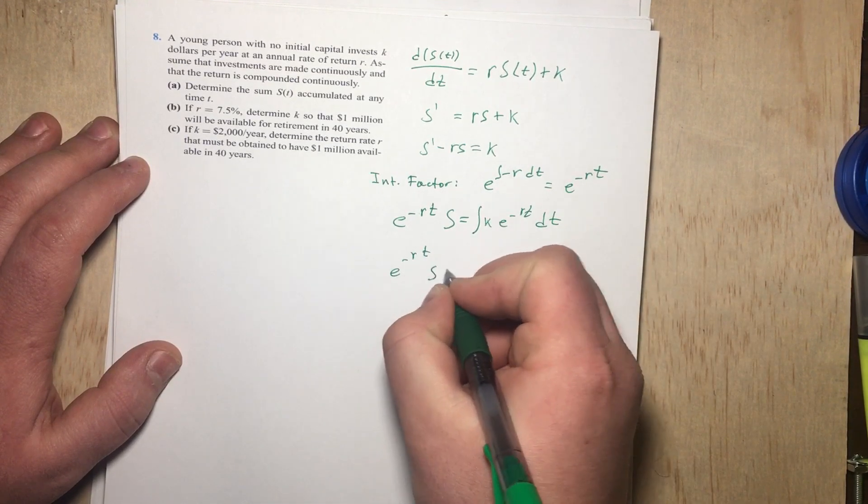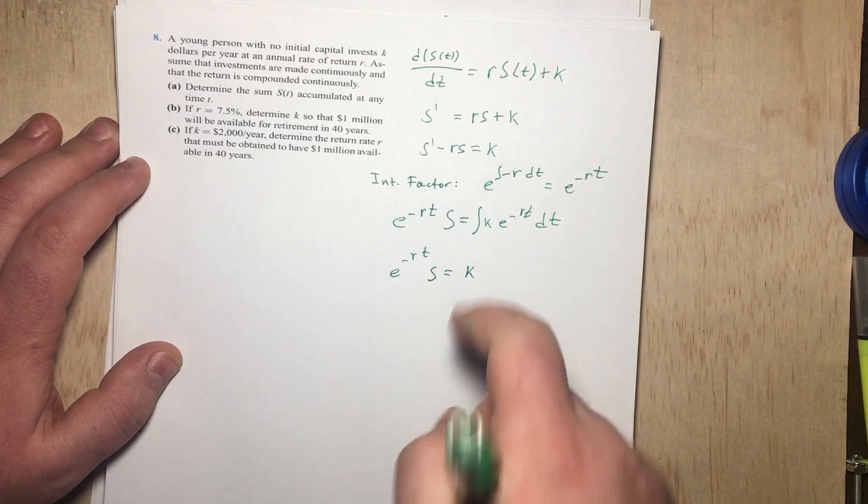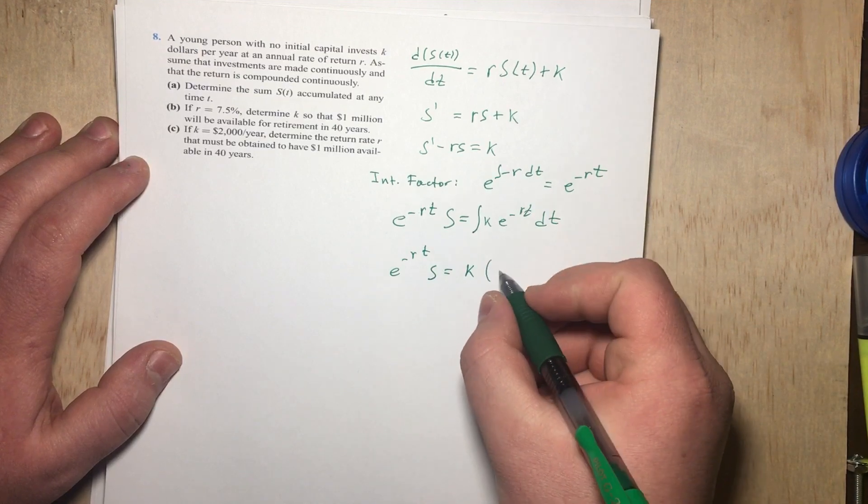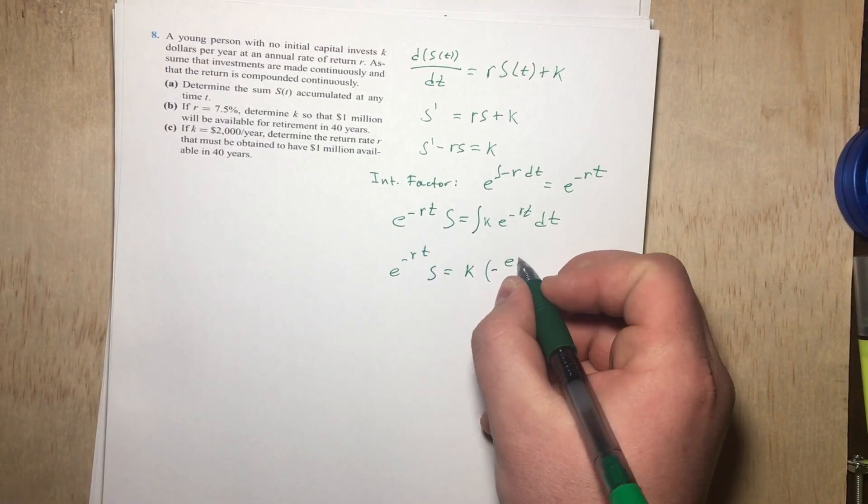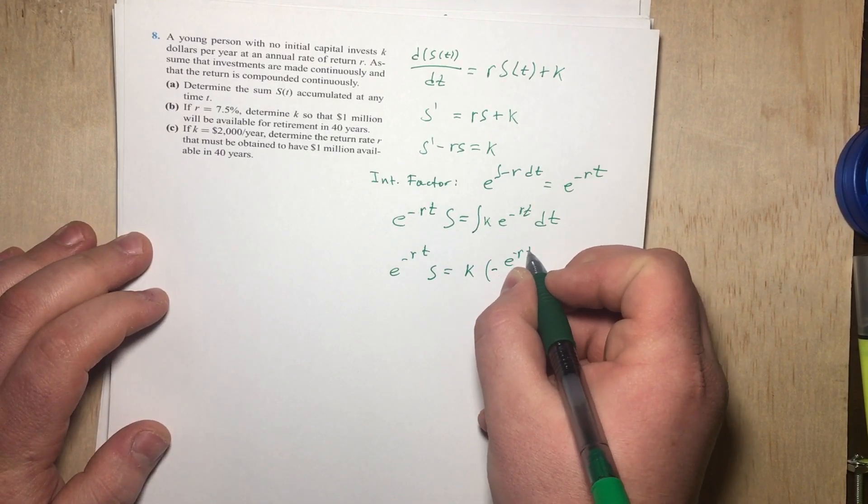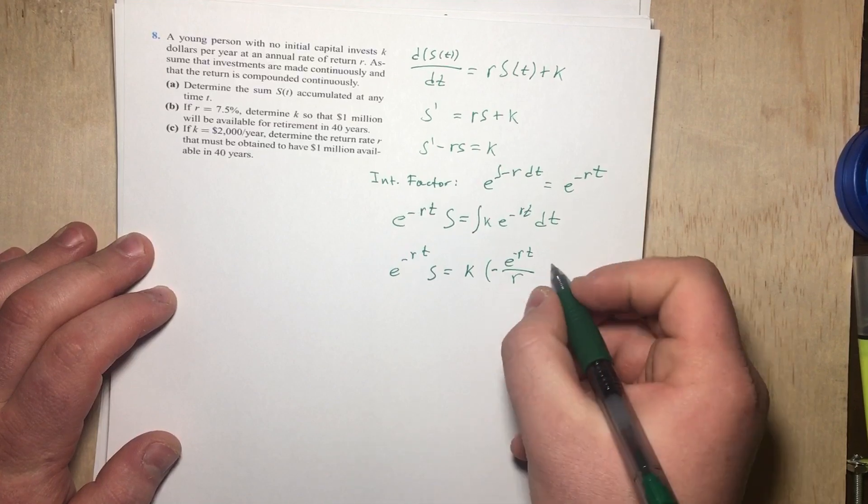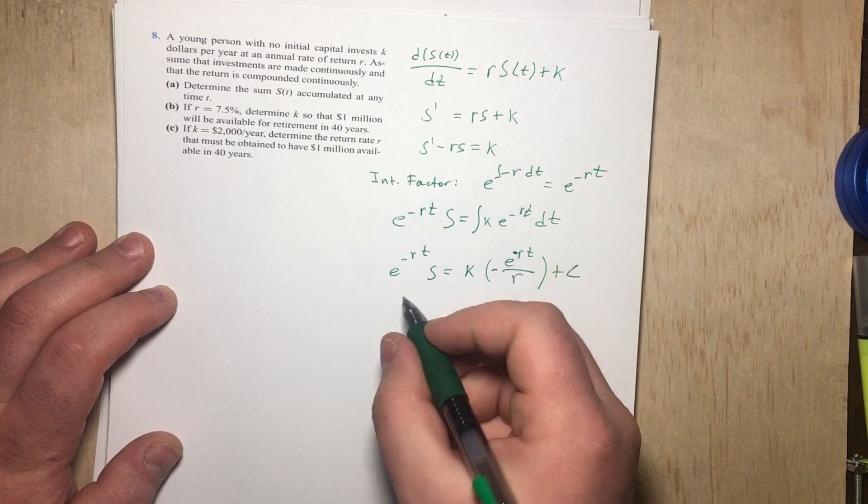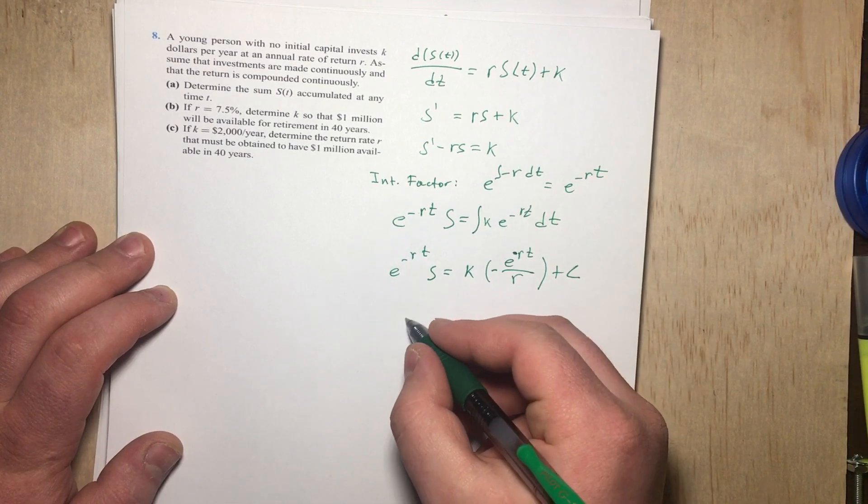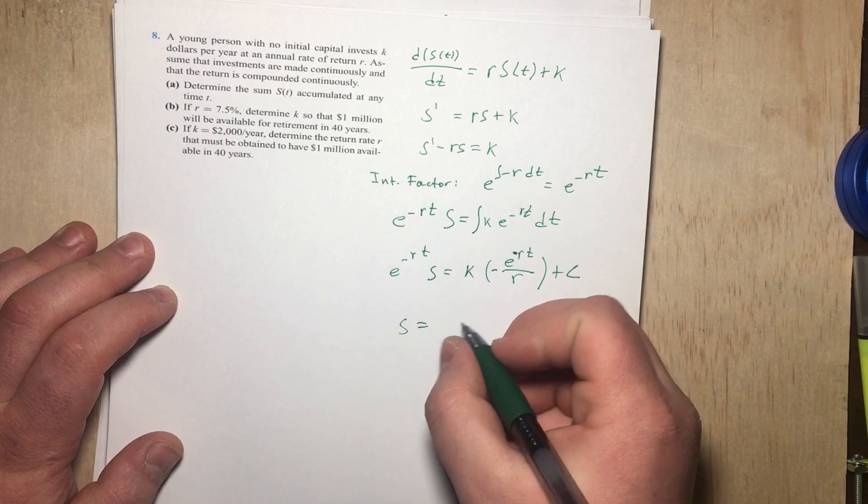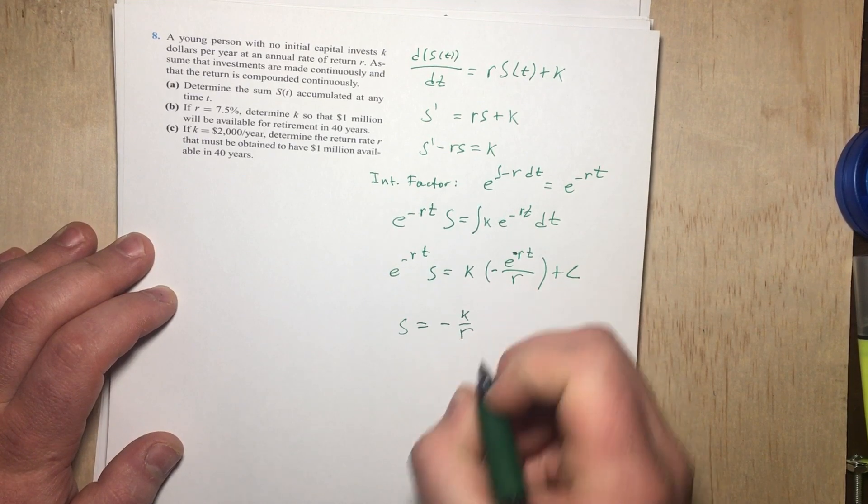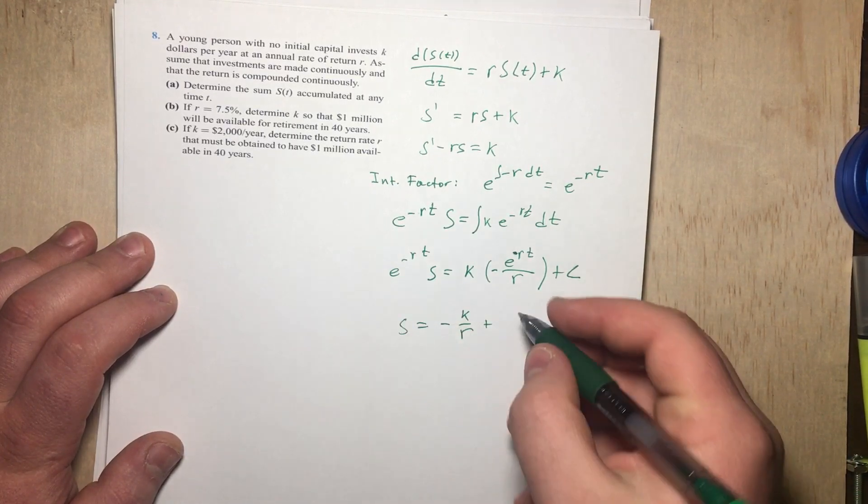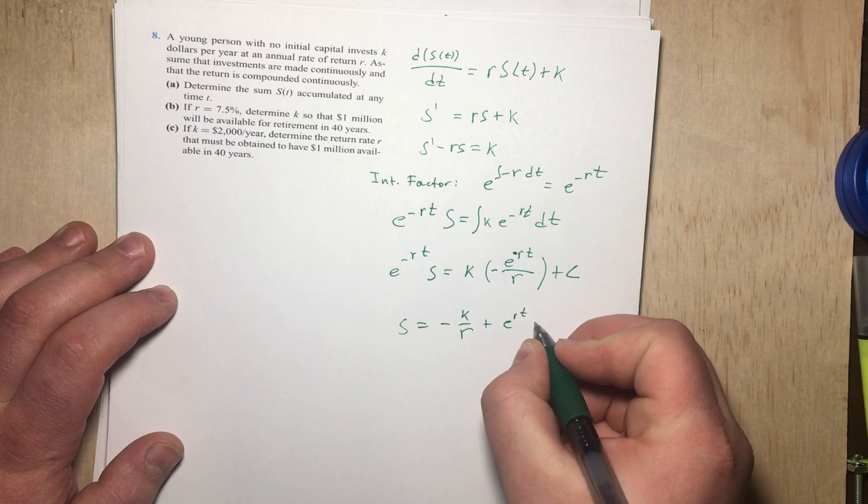e^(-Rt) times S will equal K as a constant, so nothing happens to that. And then when we take the integral of e^(-Rt), that is of course going to be -e^(-Rt)/R + C. So let's go ahead and divide on both sides by e^(-Rt). So we can get S equals, let's say, -K/R + C divided by e^(-Rt) is going to be e^(Rt) times C.